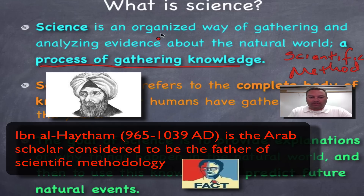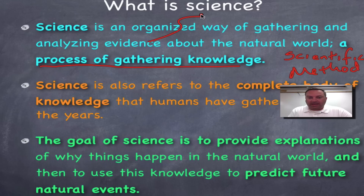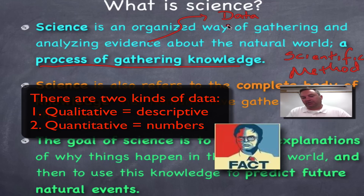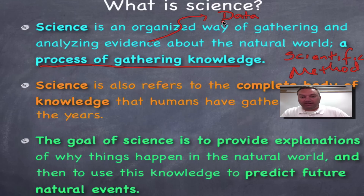I want to come back to the word evidence — evidence is called data. In our next episode we're going to cover both of these, so just remember: the process is called the scientific method, and the evidence that you collect is called data. You can pronounce it 'data' or 'data' — either one works.